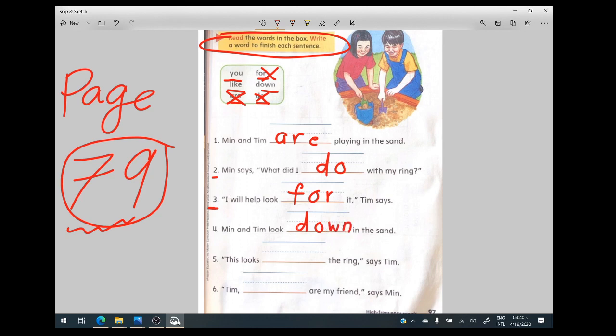Number five. This looks blank blank the ring, says Tim. This looks like the ring, says Tim. So this looks like the ring, says Tim.